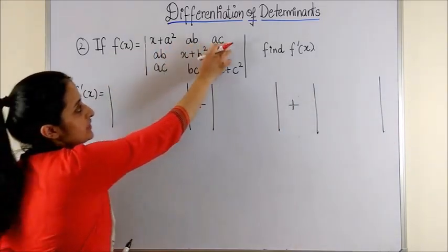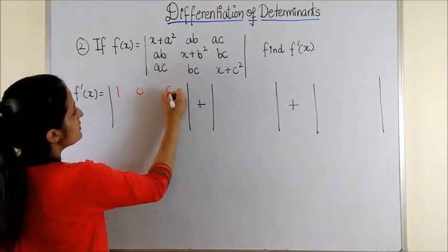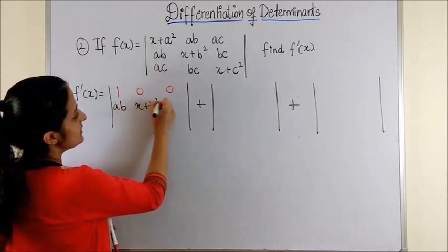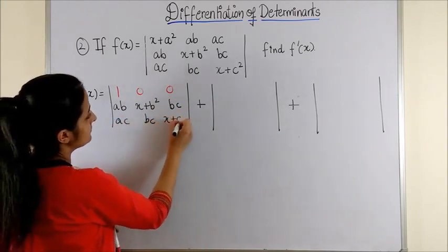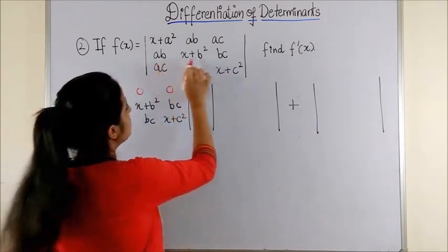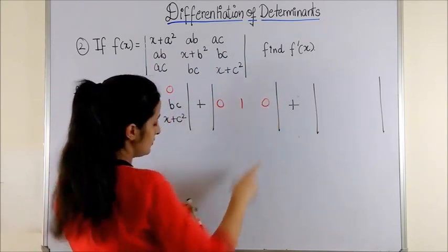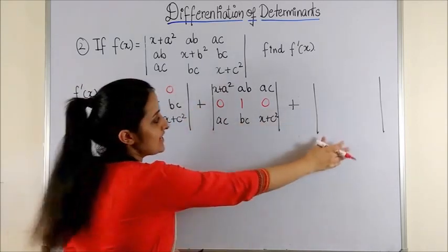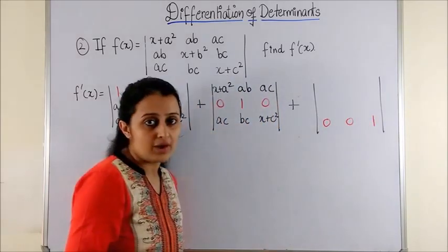For the first one, we differentiate only the first row, so this gives us 1, 0, 0, and we retain the second and third rows as they were. Similarly, for the second determinant, we differentiate the second row, which would be 0, 1, 0, and the first and third rows are retained as they were. Repeating the process with the third determinant, derivative of the third row gives us 0, 0, 1, and first and second rows are as it is.